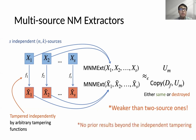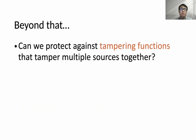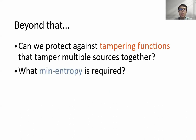In fact, there is no previous result considering cases beyond independent tampering. So in this work, we mainly focus on the following question: can we protect against a tampering function that tampers multiple sources together? And what is the min-entropy required, and what is the error?